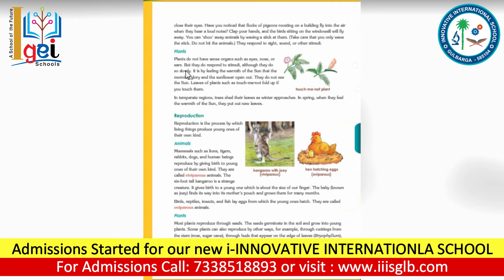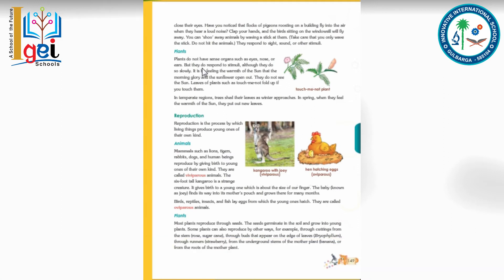Animals have sense organs such as eyes, nose, and ears, so they do respond to stimuli. Next, let's come to reproduction — it is a process by which a living thing produces young ones of their own kind.